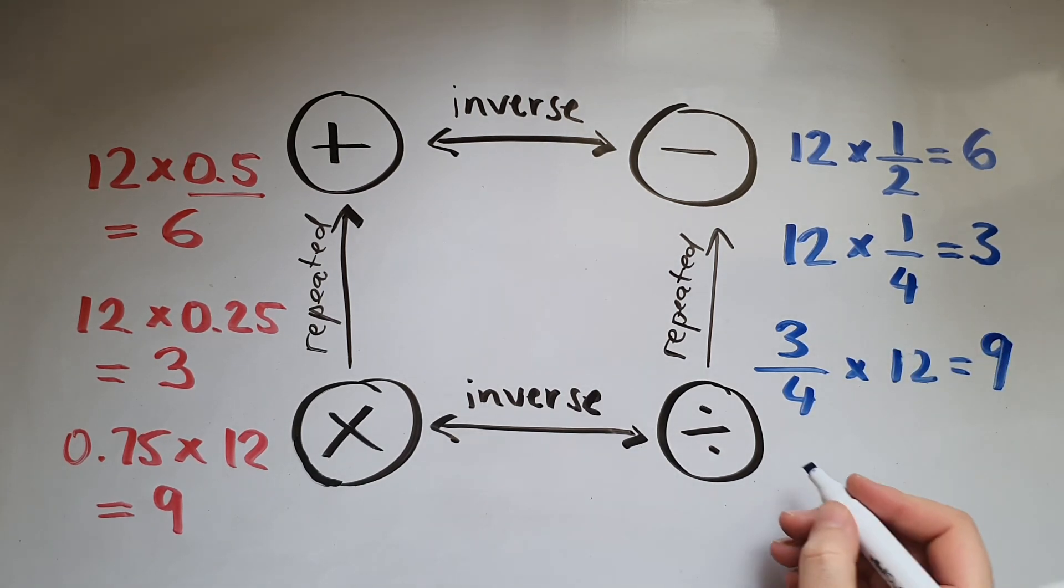If I multiply 12 by 1 tenth, for example, I'm working out a tenth of 12, which is also like multiplying 12 by 0.1.